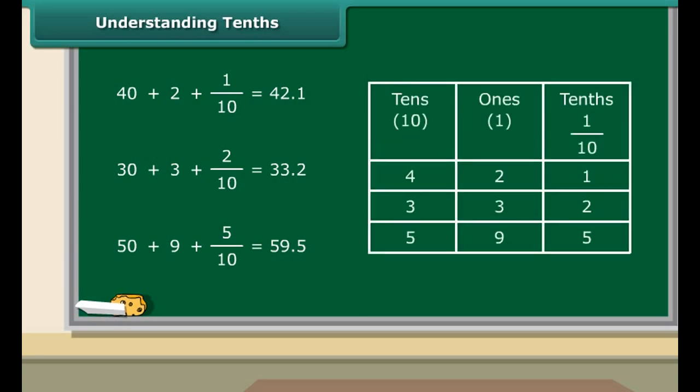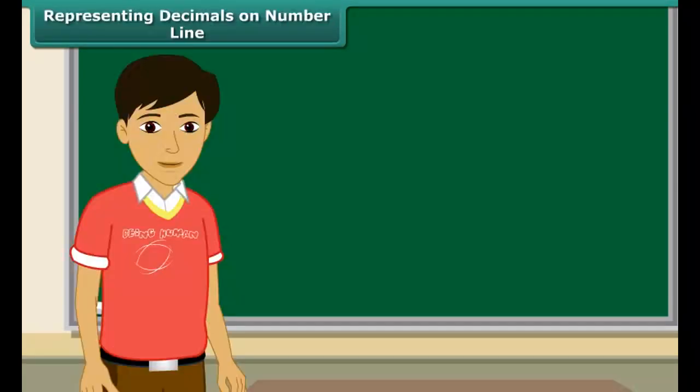Let us read these numbers from the table. Four tens and two ones and one tenth make 42.1. Three tens and three ones and two tenths make 33.2. Similarly, five tens and nine ones and five tenths make 59.5.